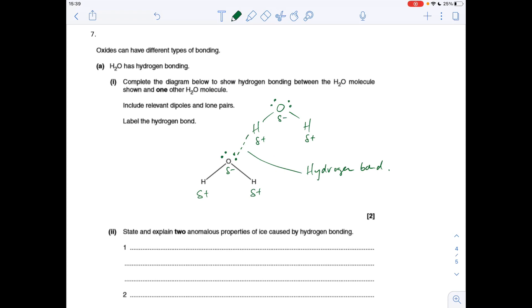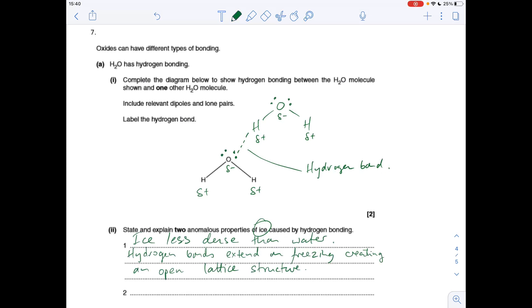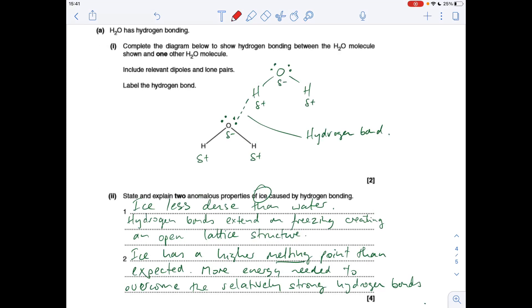The final, final question. State and explain two anomalous properties of ice caused by hydrogen bonding. The first one I'm going for is the fact that ice is less dense than water. That's why ice floats. It's because when water freezes, the hydrogen bonds extend and it pushes the water molecules further apart, giving it an open lattice structure. The other property I'm going to talk about is the higher than expected melting point of ice, and that's due to the fact that extra energy is required to overcome these relatively strong hydrogen bonds. In terms of marks for that, we'll just go for a mark for the property and a mark for the explanation.